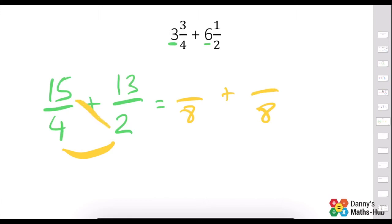2 times 15 is 30. 4 times 13 is 52. 30 add 52 is 82 over 8. How many 8s go into 82? 10, remainder 2. 2 over 8 can be simplified down to 1 quarter.